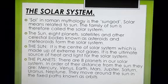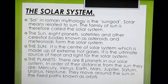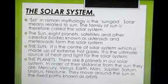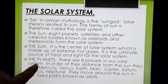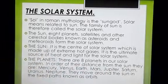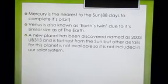There are eight planets in our solar system. In order of their distance from the Sun they are: Mercury, Venus, Earth, Mars, Jupiter, Saturn, Uranus and Neptune. They all move around the Sun in a fixed path known as orbit. To remember the sequence, learn the line: My Very Educated Mother Just Served Us Nuts.